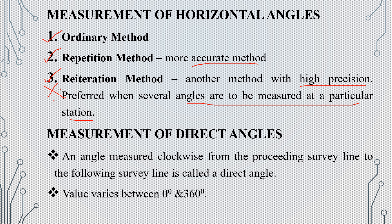An angle measured clockwise from the preceding survey line to the following survey line is called a Direct Angle. The value of a direct angle varies from 0 degrees to 360 degrees.